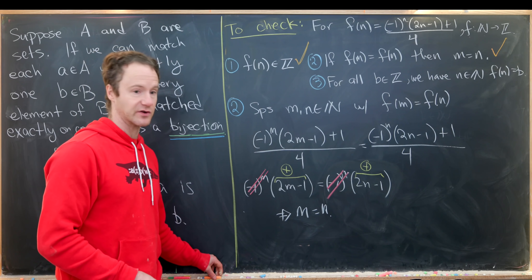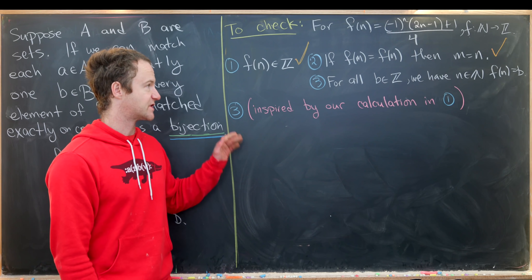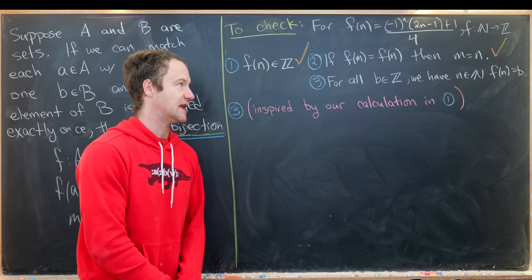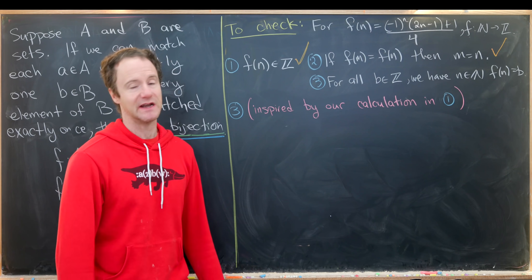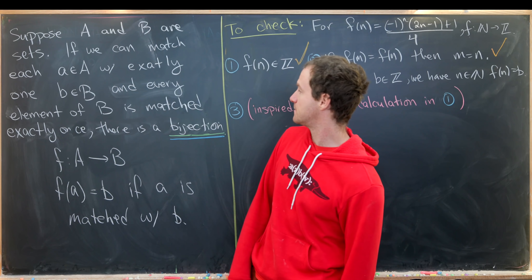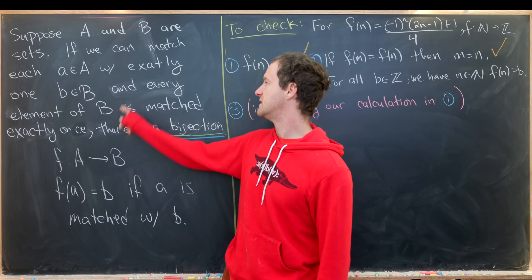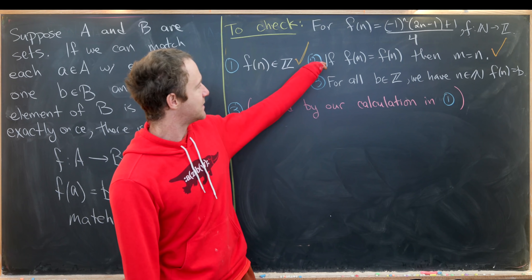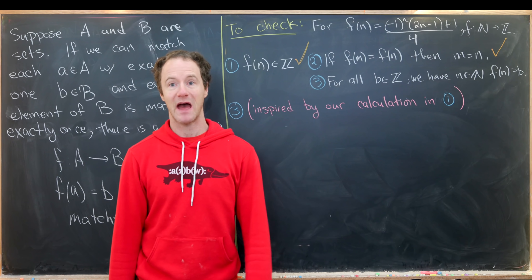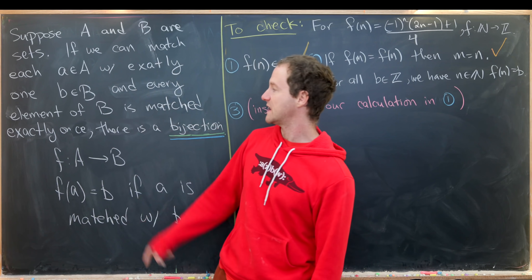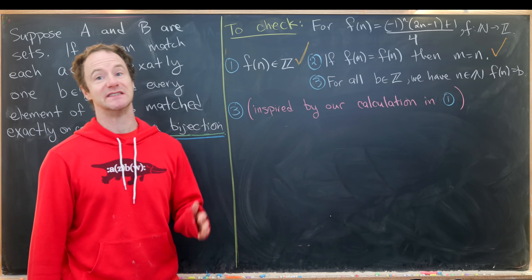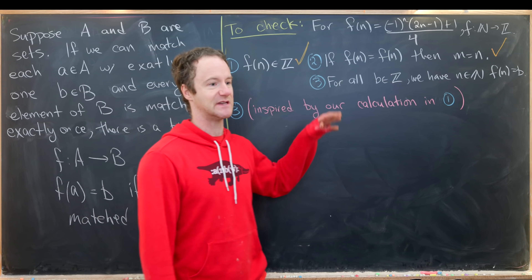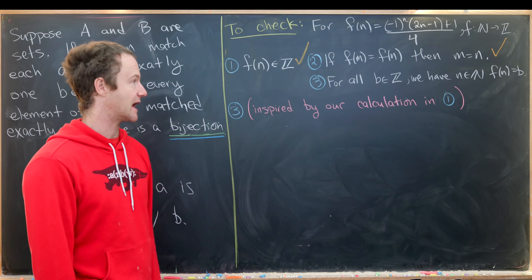Now condition three: surjectivity — for all b in ℤ, there exists an n in ℕ such that f(n) = b. This ensures every element of B is matched at least once. Combined with injectivity (matched at most once), together they guarantee every element is matched exactly once.